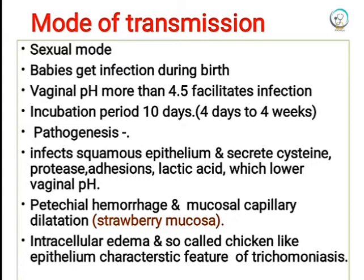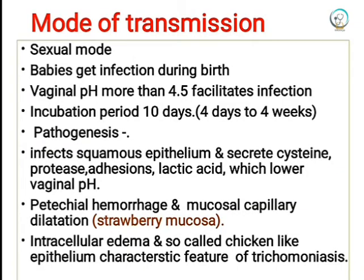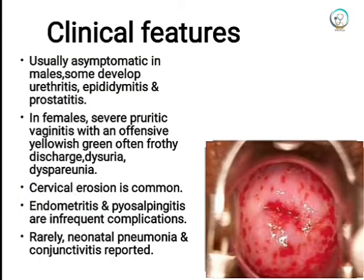The infection causes punctate hemorrhage and mucosal capillary dilatation, a condition called strawberry mucosa, which is a characteristic feature of trichomoniasis — the vaginal mucosa resembles a strawberry. It also causes intracellular edema, producing what is called chicken-like epithelium, another characteristic feature.